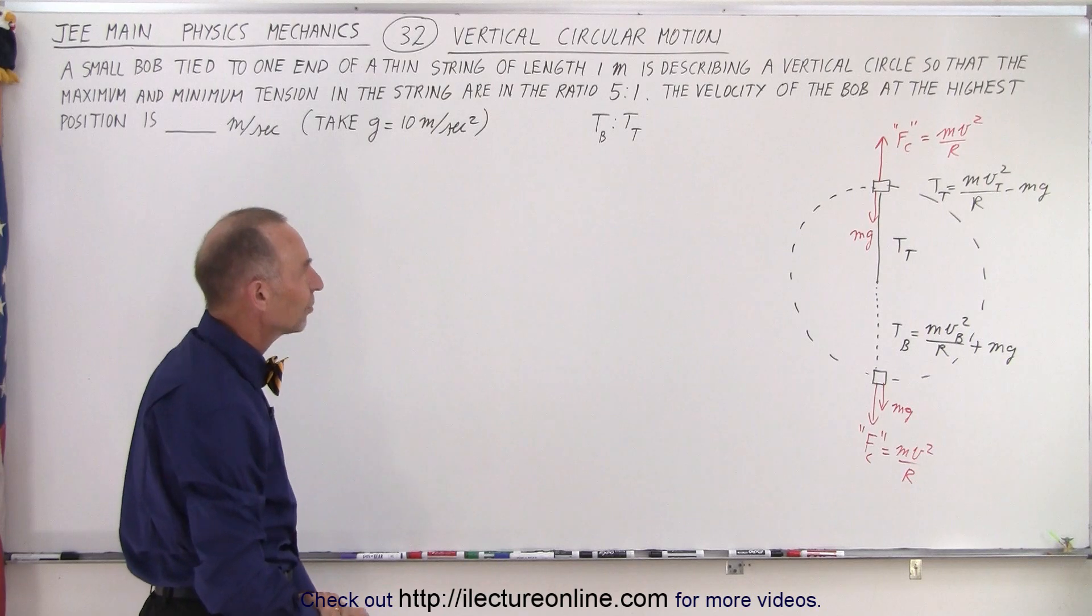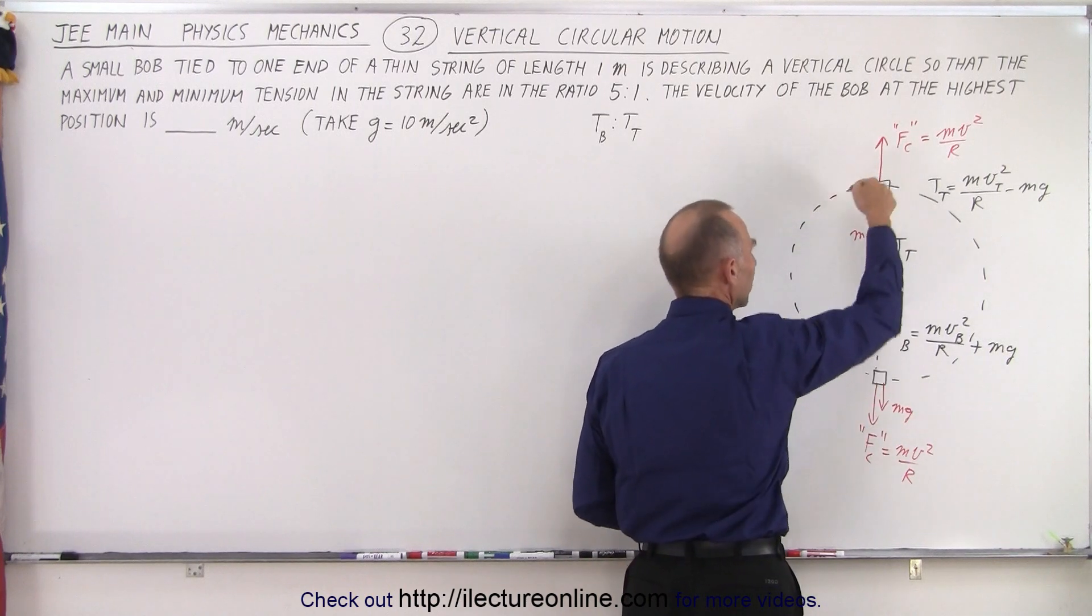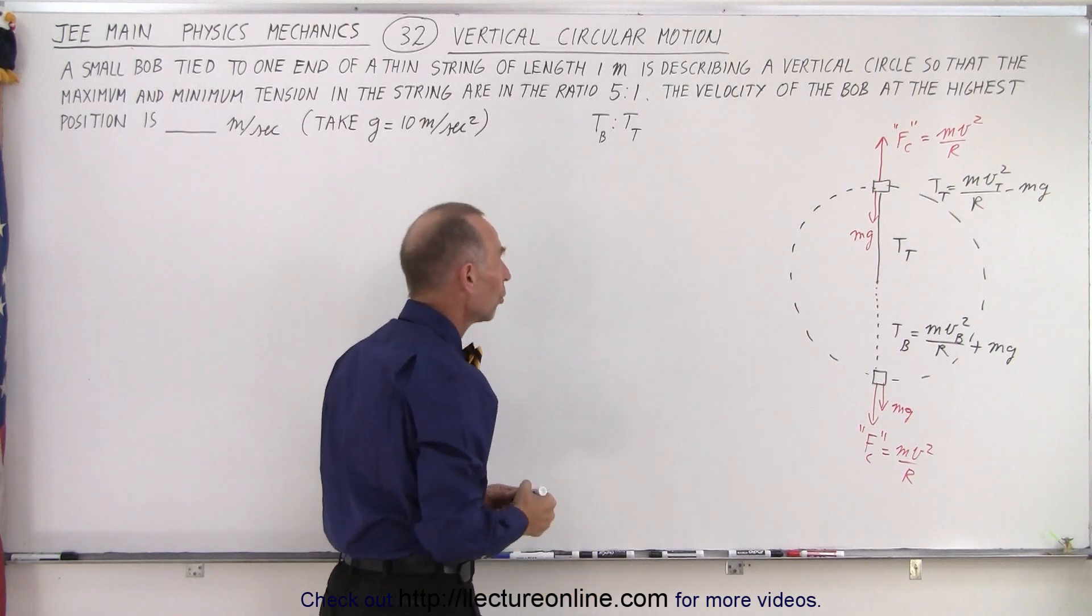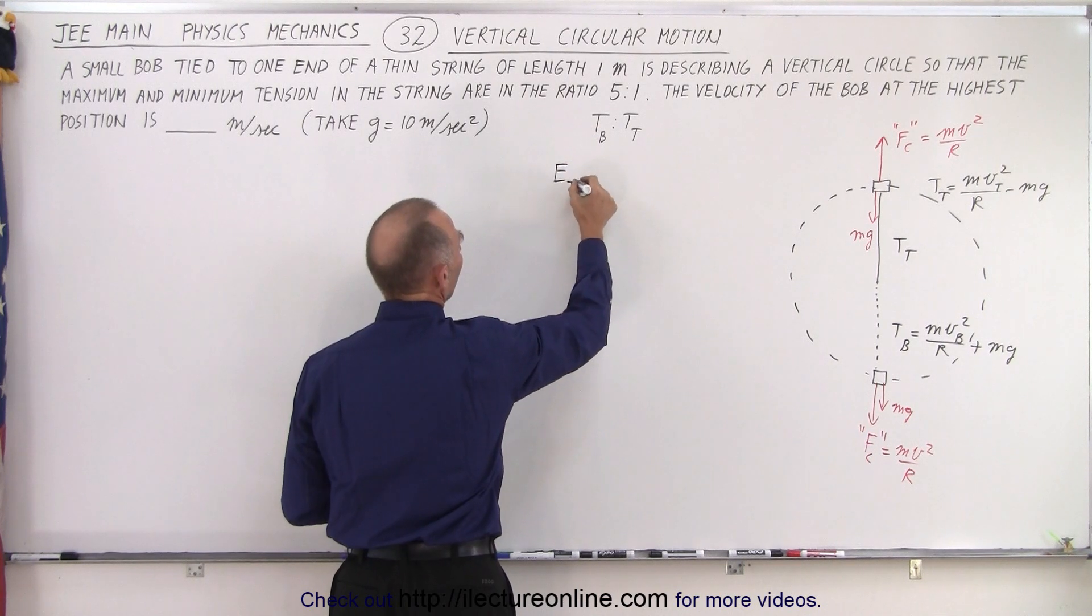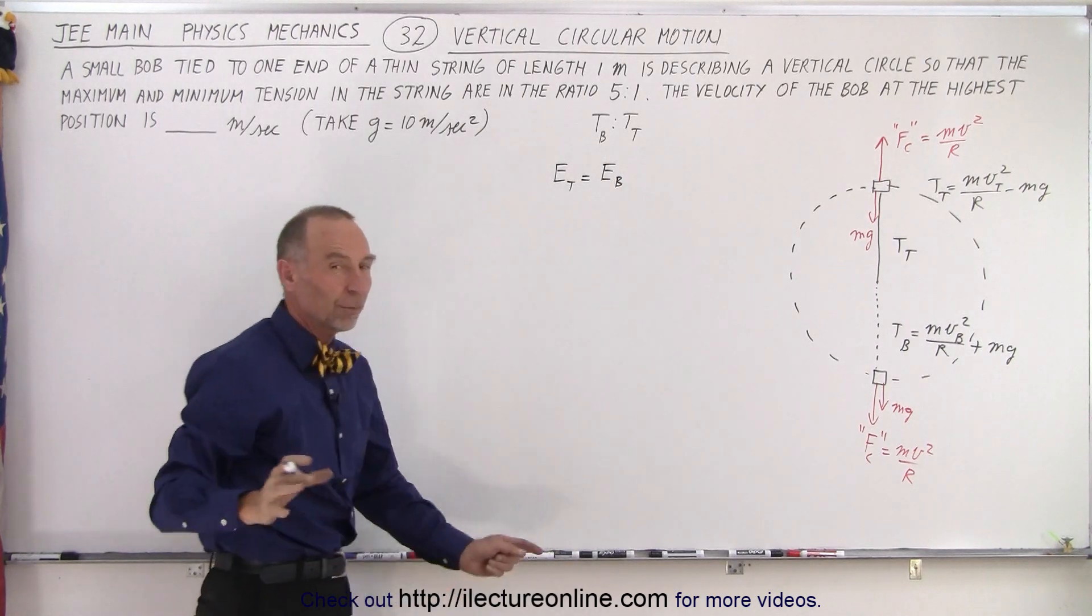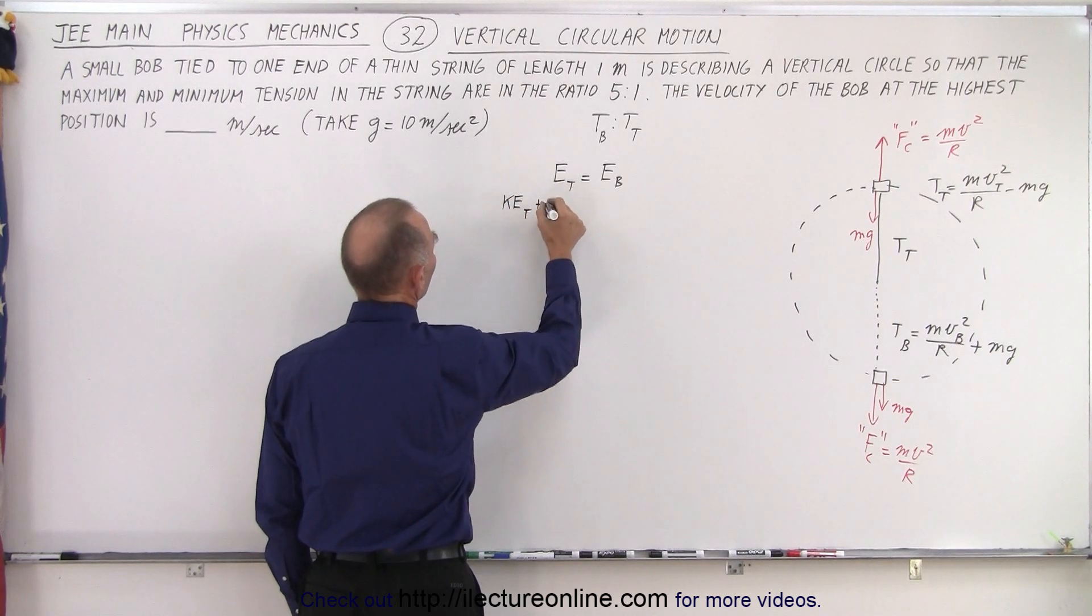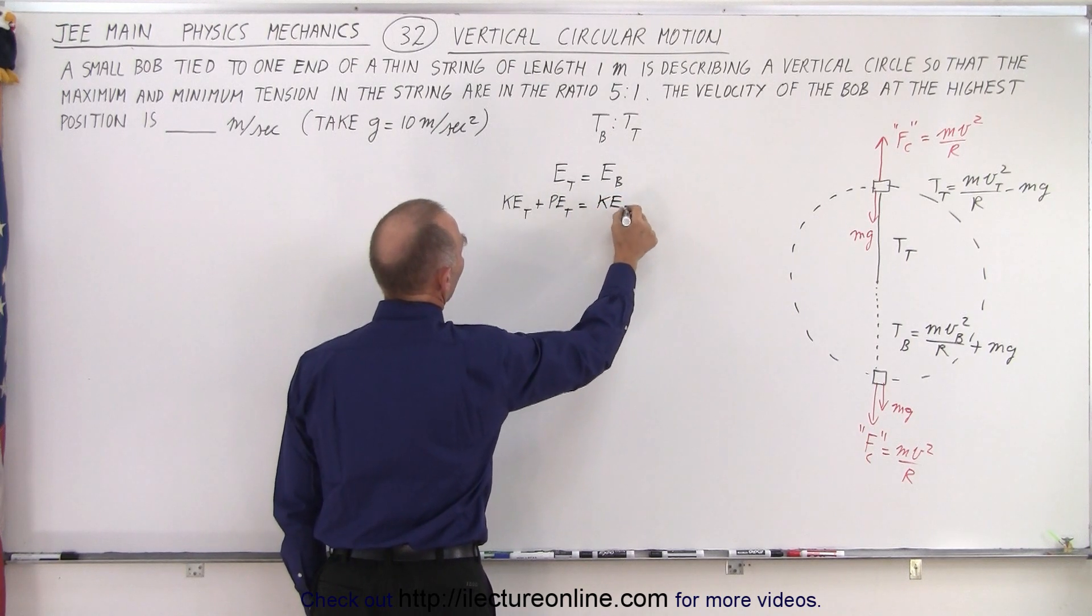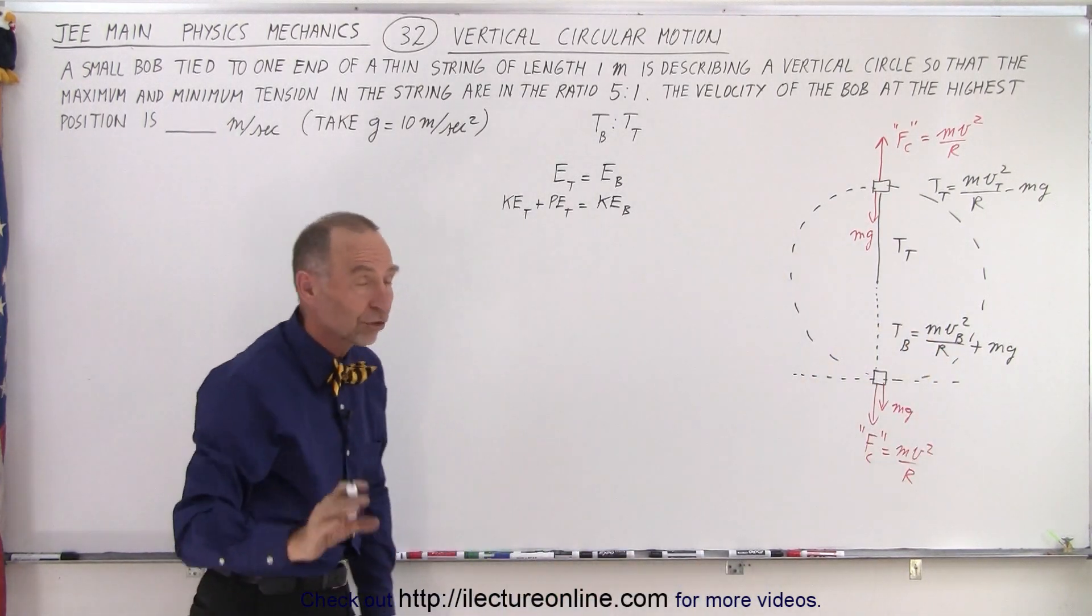The next thing we have to realize is the velocity is going to change because notice when the object is at the top it's gained potential energy, and when it's at the bottom it's converted that potential energy back into kinetic energy. So we're going to use the energy conservation equation where energy at the top is equal to energy at the bottom. So the sum of all the energies need to add up. So in this case we can say that the kinetic energy at the top plus the potential energy at the top equals the kinetic energy at the bottom. We're going to assume that this is our reference height so that there's no potential energy at the bottom. We'll just call that zero.